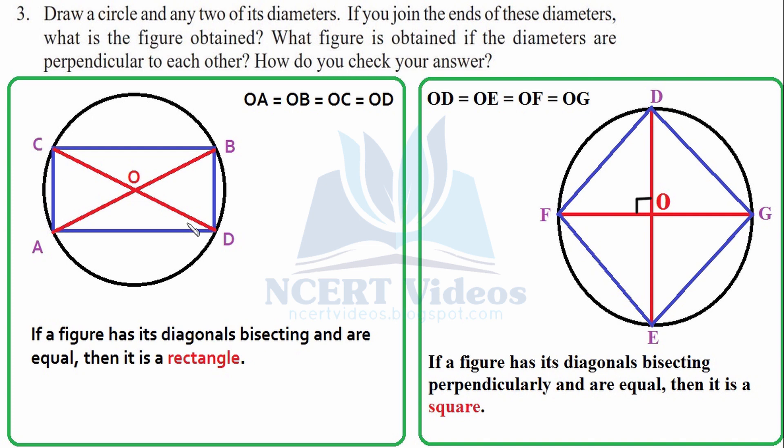That's what we have studied in your previous chapters. We are just applying it now on the circle. The figure or the quadrilateral that is obtained here is a rectangle. You can also check or you can check by measuring it with the help of ruler.